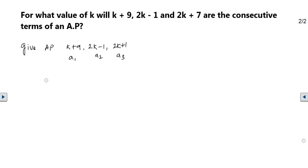Just remember, in an arithmetic progression, the common difference between any two numbers will be equal. That is, a2 minus a1 will always equal a3 minus a2.